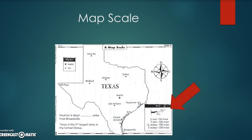This is a map scale. It shows that Houston is a certain number of miles from Brownsville. You can see that one inch equals 100 miles. Here is Houston and there is Brownsville — that's about two inches. So according to our map scale, two inches equals 200 miles. That gives you a visual representation of distance.